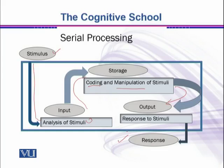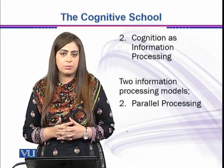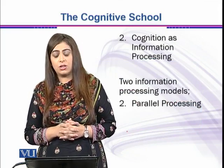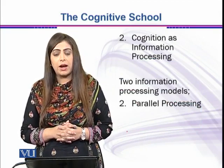This is how serial processing works: when a single stimulus impacts your mind, there is a certain procedure — an input, storage of all that information, and then an output — resulting in a response for a certain thing. So that was all about serial processing.